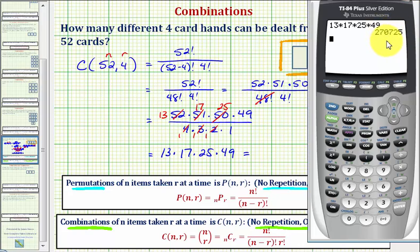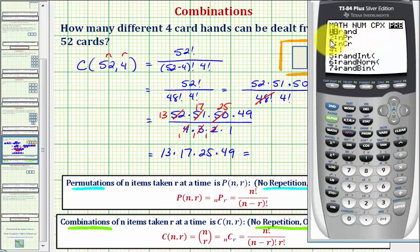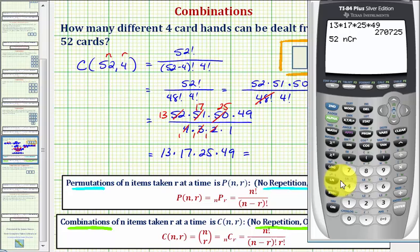But while we're here, let's check our work by evaluating the original combination on the calculator. The calculator uses this notation here. So we first enter n, which is fifty-two. Now we want to select combination. So we'll press math, right arrow to probability, and then option three for combination. And now we enter r, which is four, and enter. This verifies our work is correct.